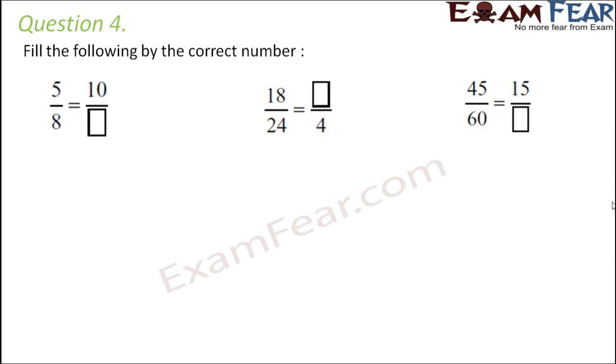Question number 4. Fill the following by the correct number. 5 by 8 is equal to 10 by dash. Now how would you get 10 in the numerator? Only when you multiply the numerator by 2. So if you multiply the numerator by 2, you have to multiply the denominator also by 2. So what would be the result? Here 8 into 2 is 16. So this would be 16.